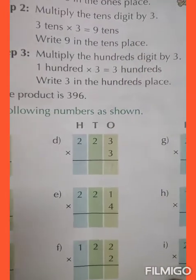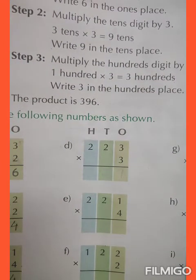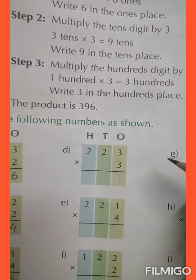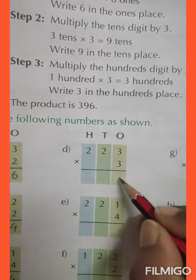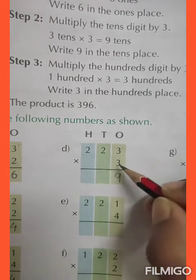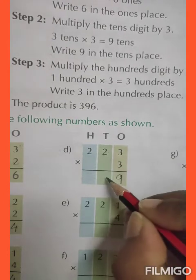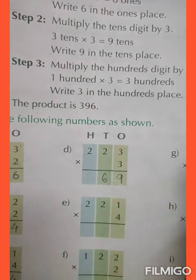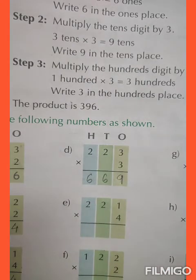Question number D, we have to multiply 223 by 3. So, 3 threes are 9, 3 twos are 6, 3 twos are 6. And the answer is 669.